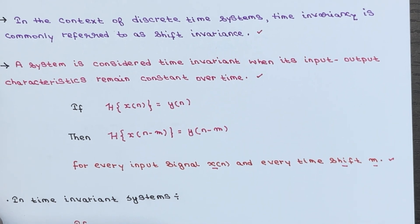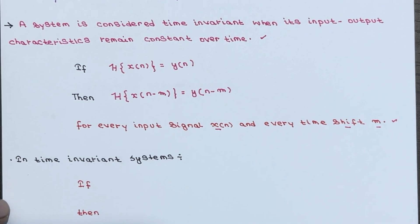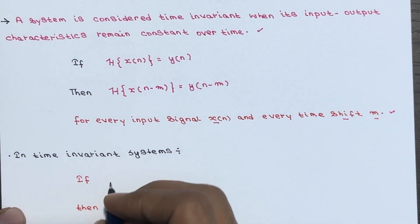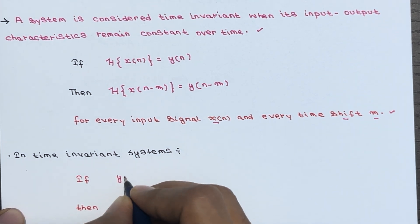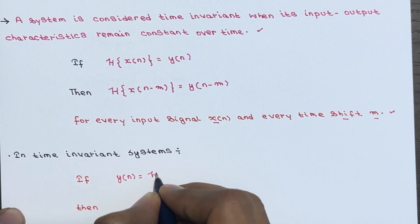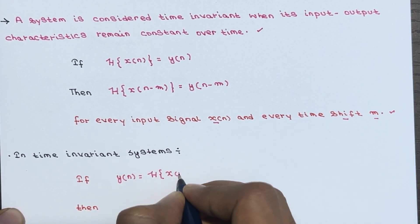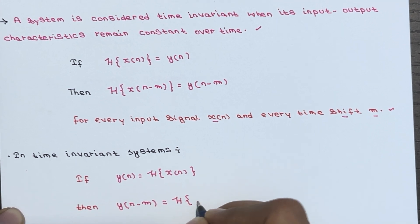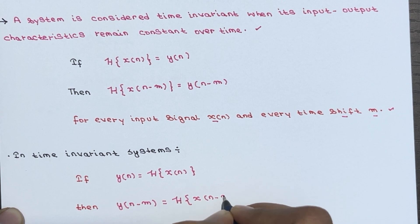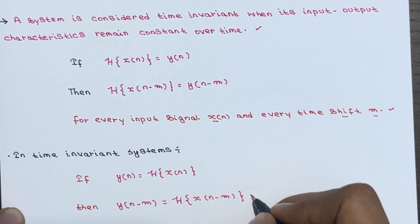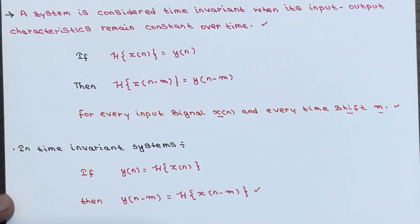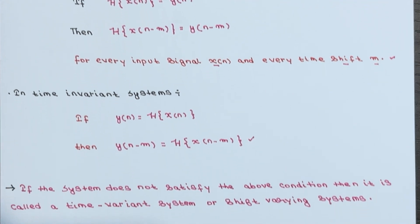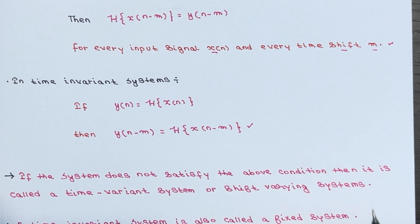In time invariant systems, if y(n) is equal to the transform of x(n), then y(n − m) must be equal to the transform of x(n − m). You should remember this particular point — if these conditions are satisfied, we can say the system is time invariant.